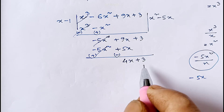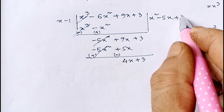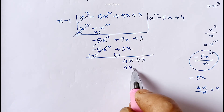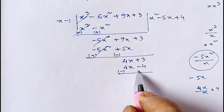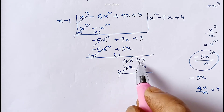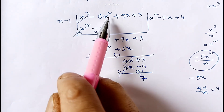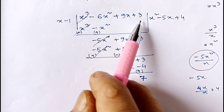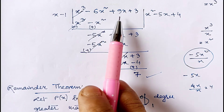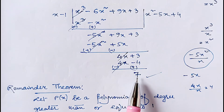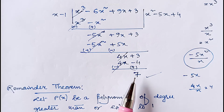Now 4x divided by x gives 4. Multiplying: 4 into x gives 4x, and 4 into -1 gives -4. Changing signs and cancelling, we get +3 + 4, so the remainder is 7. Therefore when x³ - 6x² + 9x + 3 is divided by x - 1, the remainder is 7. This process is called the long division method.